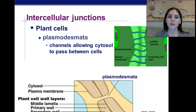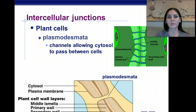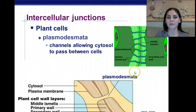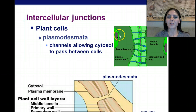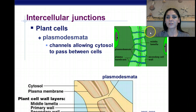We have intracellular junctions in plant cells, and those are called the plasmodesmata. These are channels that allow cytosol to pass between cells, from one cell to the next. If you look at this diagram, these plasmodesmata are allowing cytoplasm from this cell to flow into the cytoplasm of the next cell.